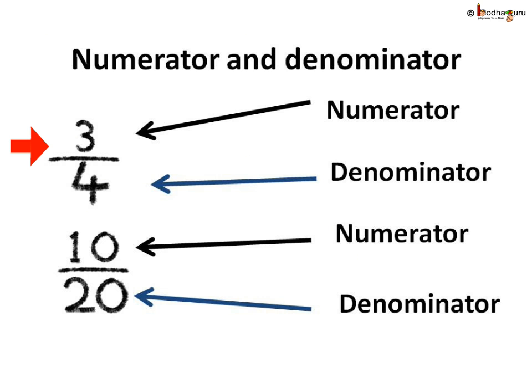In the same way, in three by four, three is the numerator and four is the denominator. In ten by twenty — that is, ten parts out of twenty parts — ten is the numerator and twenty is the denominator.